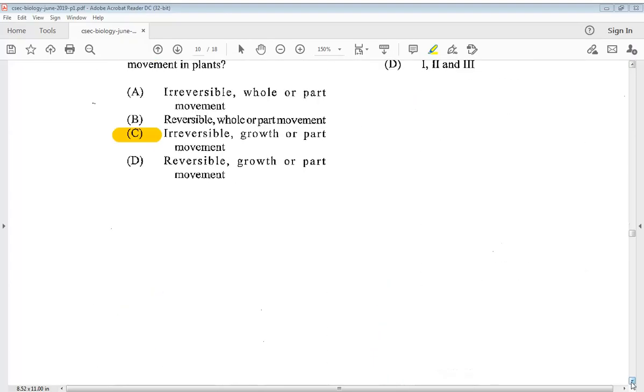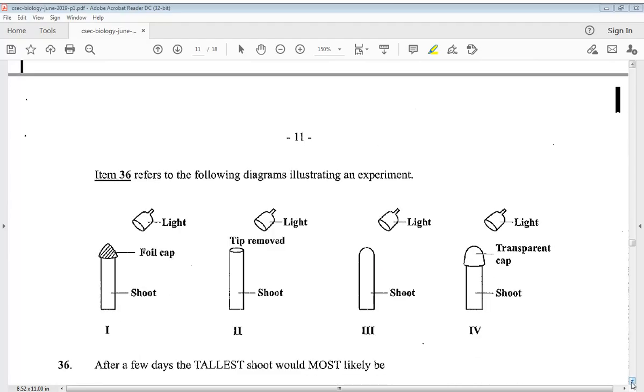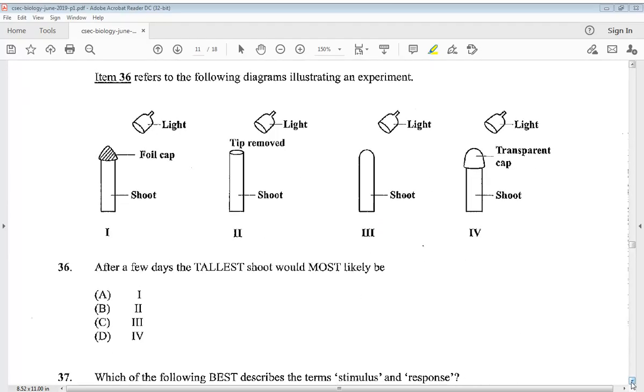Let's go to 36. Item 36 refers to the following diagrams illustrating an experiment. This diagram is not new to us. After a few days the tallest shoot would most likely be - so we have four different experiments. So we know it would be A. Tell me what you think in the comment section below, let me know your answer.